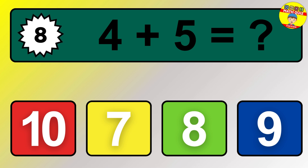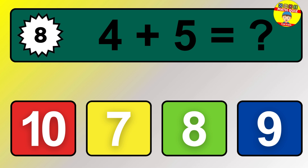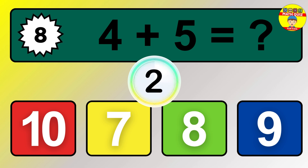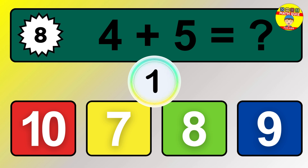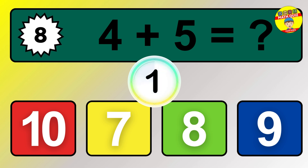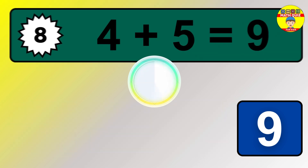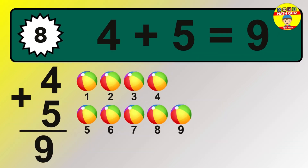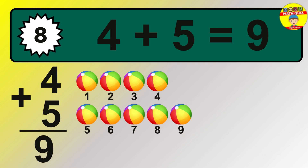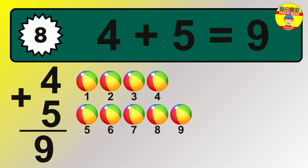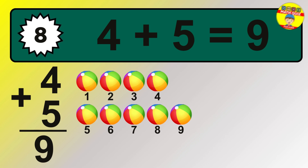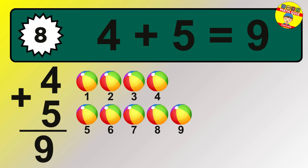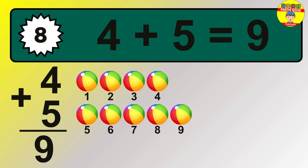Question 8. 4 plus 5 equals what? So the answer is 4 plus 5 is 9. Let's count it. 1, 2, 3, 4, 5, 6, 7, 8, 9.